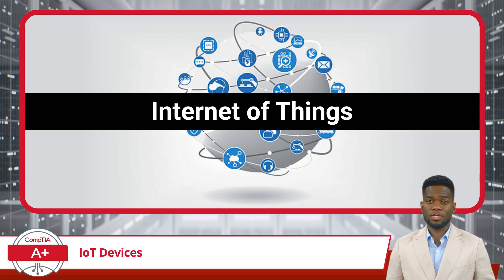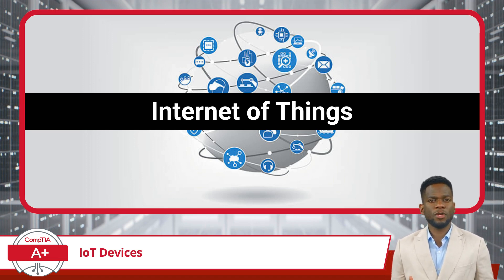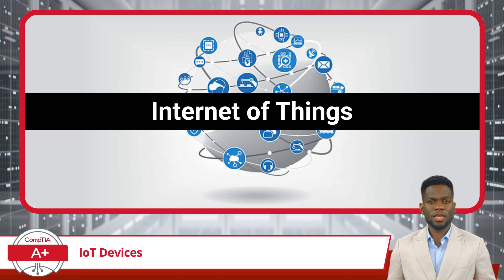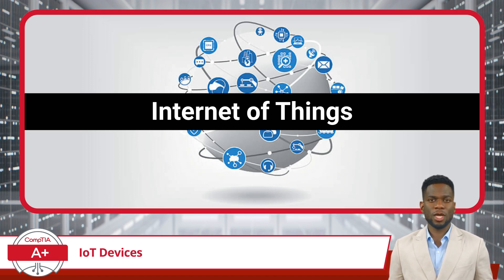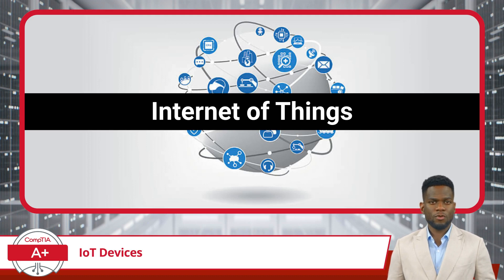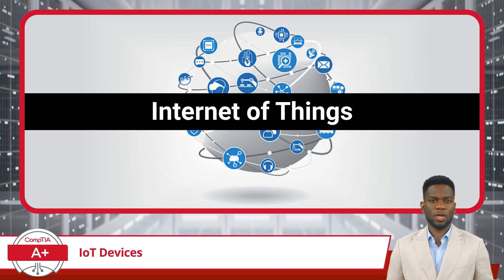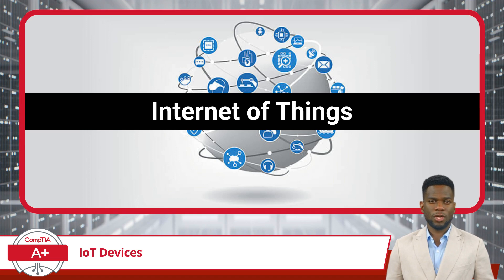Each IoT device is typically equipped with sensors, an embedded operating system, and networking capabilities, which facilitate communication and data exchange. The Internet of Things enables these devices to interact not only with each other, but also with humans. This interactivity allows for the gathering and analysis of data, automation of processes, and remote monitoring and control.